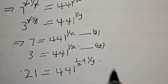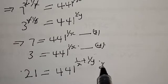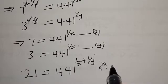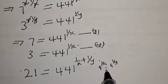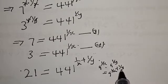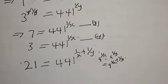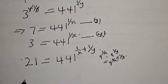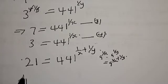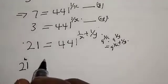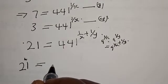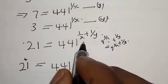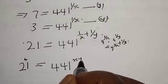That is, 1 over x plus 1 over y, which simplifies to y plus x over x·y. So we have 21 equal to 441 raised to power x·y over y plus x, and we need to find x·y over x plus y.